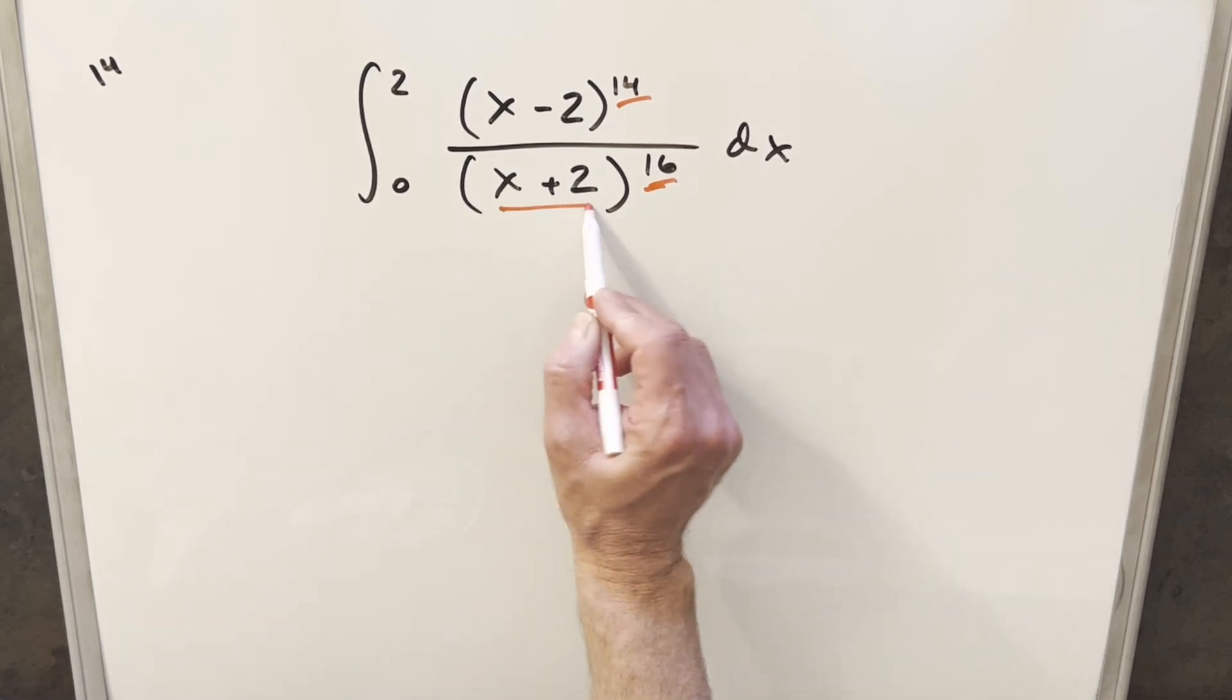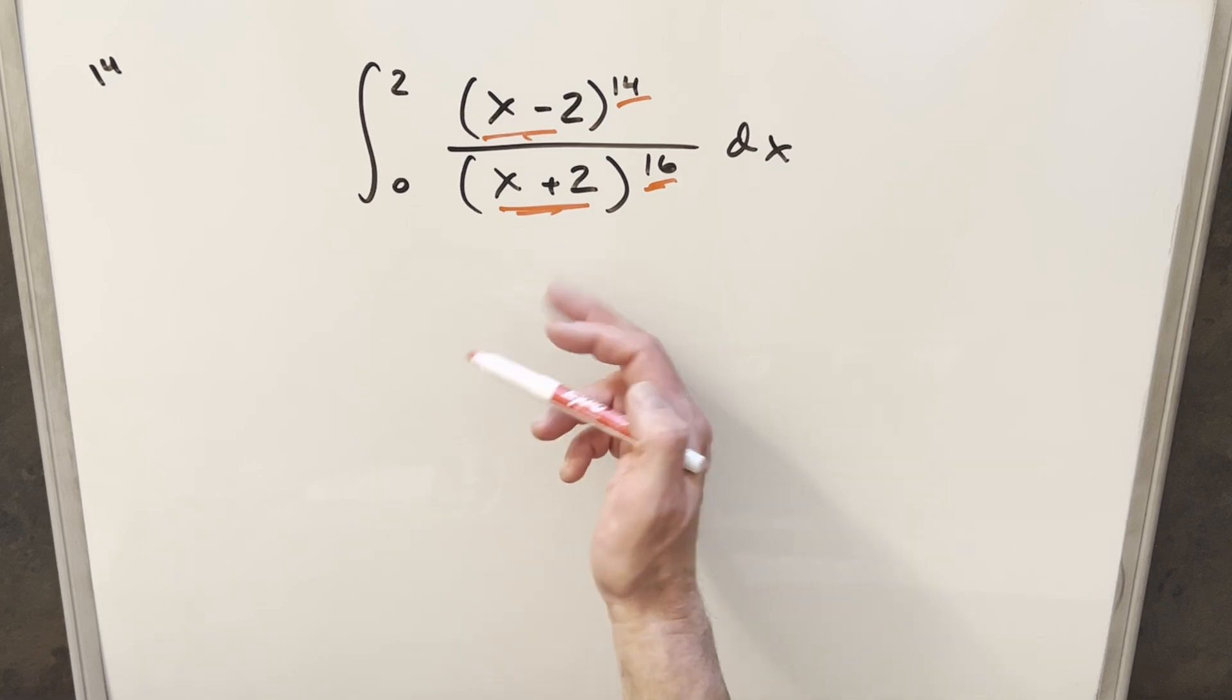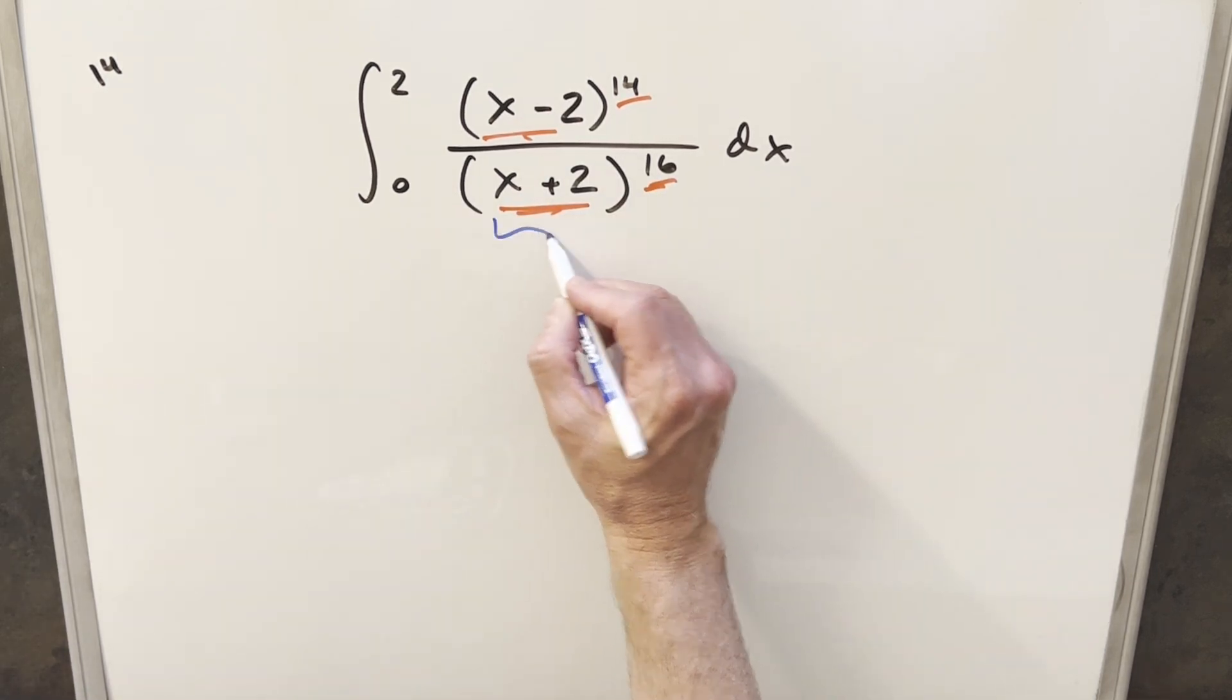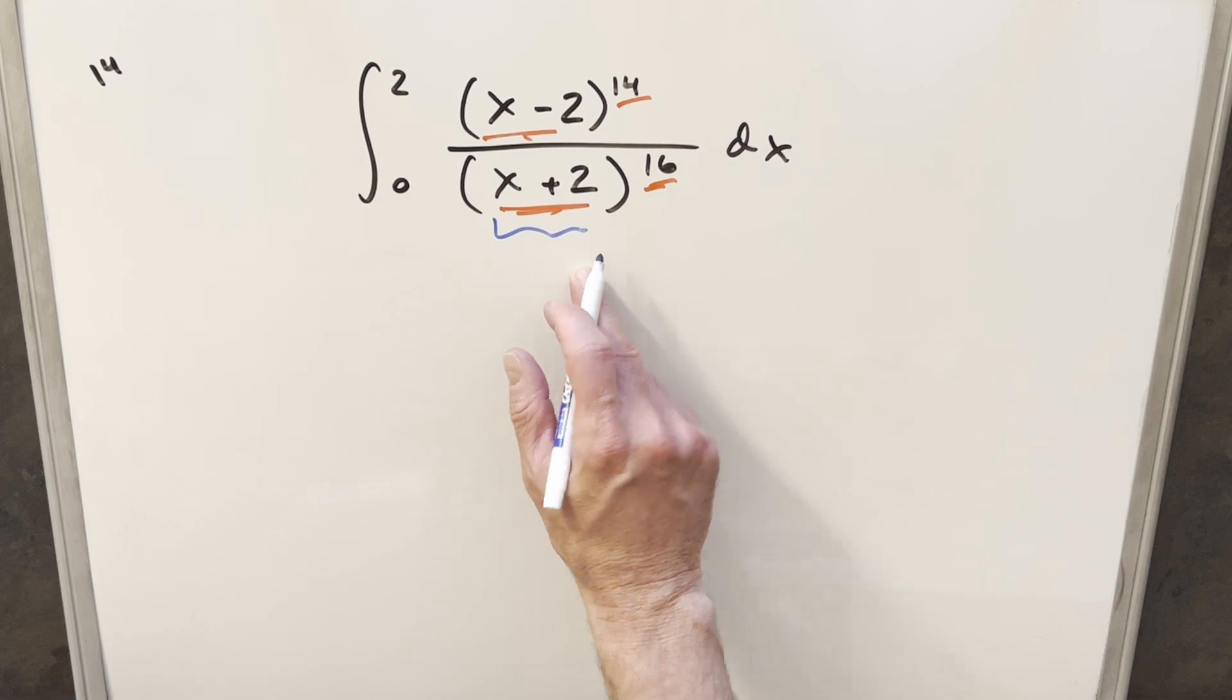We don't want to do that, and also we've got a different base here, so we can't really divide these into each other. But let's just do a u substitution, simplify the denominator, and then hopefully we can divide it into the numerator.